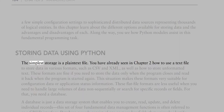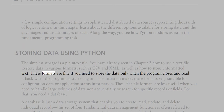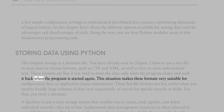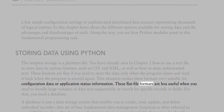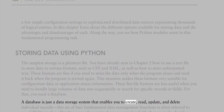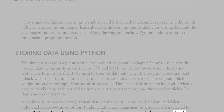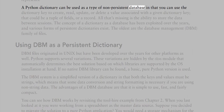The simplest storage is a plain text file. You've already seen how to use a text file to store data in various formats such as CSV and XML, as well as unformatted text. These formats are fine if you need to store data only when the program closes and read it back when started again, making them suitable for configuration data or application status. Flat file formats are less useful when you need to handle large volumes of data non-sequentially or search for specific records — for that you need a database.